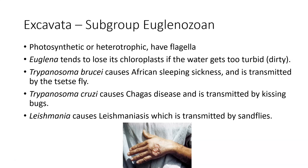The euglenozoan subgroup is still within the Excavata group. Euglenozoans are interesting because some of them are free-living, cause you no harm, and are in fact beneficial — while some of them will make you wish you were dead. This group does have flagella. Sometimes one organism can be photosynthetic during one portion of its life and then heterotrophic in another; sometimes an organism will be just one or the other, making it a diverse group.